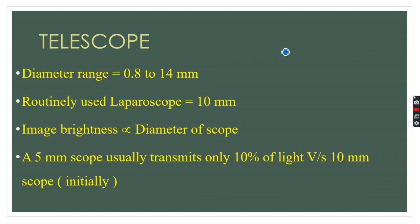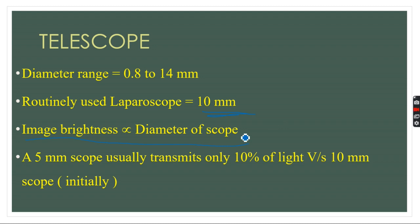The third important property of the telescope is the diameter, which ranges from 0.8 mm to 14 mm. In laparoscopy, the routinely used diameter for laparoscopic cholecystectomy or laparoscopic appendectomy is 10 mm. Remember that image brightness is directly proportional to the diameter of the scope — the brightness produced by a 2 mm scope will be less compared to that of a 10 mm scope. As the diameter increases, brightness also increases. For example, a 5 mm scope transmits only 10 percent of the light compared to the 10 mm scope.